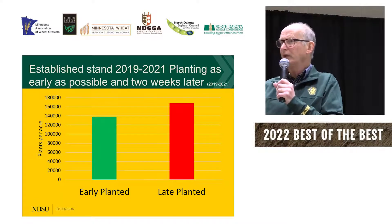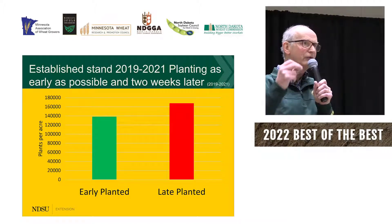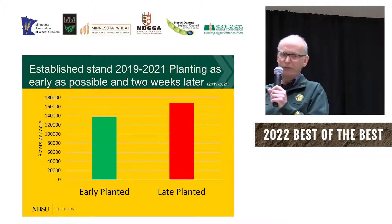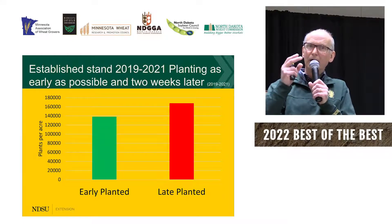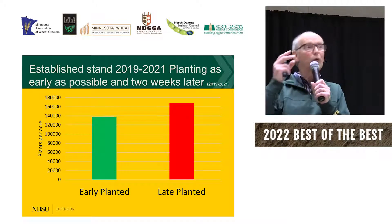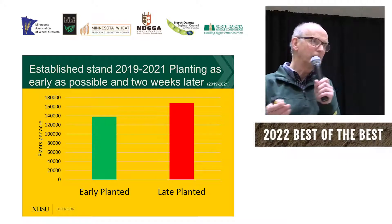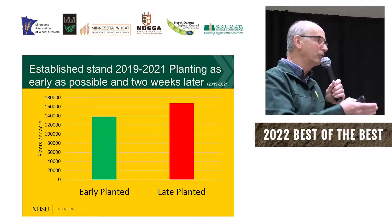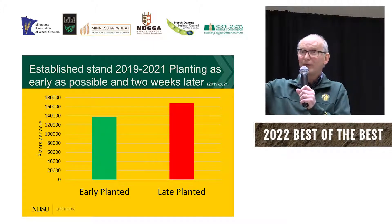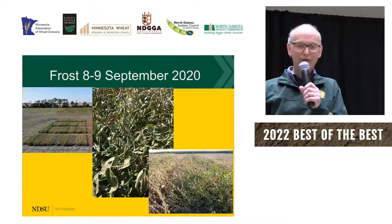We also looked at stand in the 21 experiments comparing early planted versus late planted. On the left is plants per acre. Early planting, which I hoped would be the better yielding, actually had a lower stand — because you planted two weeks earlier, it was colder, and fewer seeds survived into plants. However, I just showed that although the plants were fewer, the yields were higher. So we have to keep that in mind.